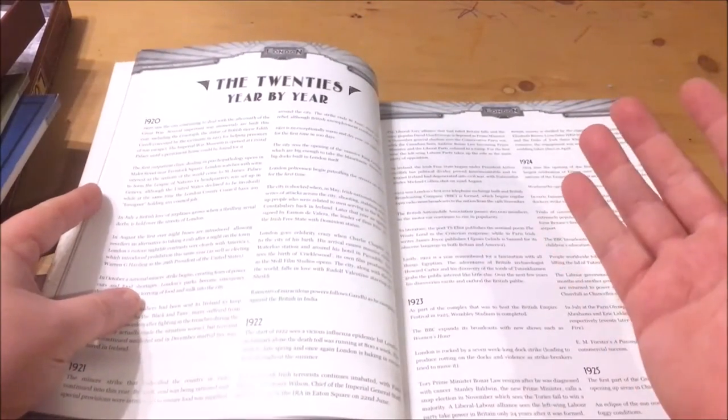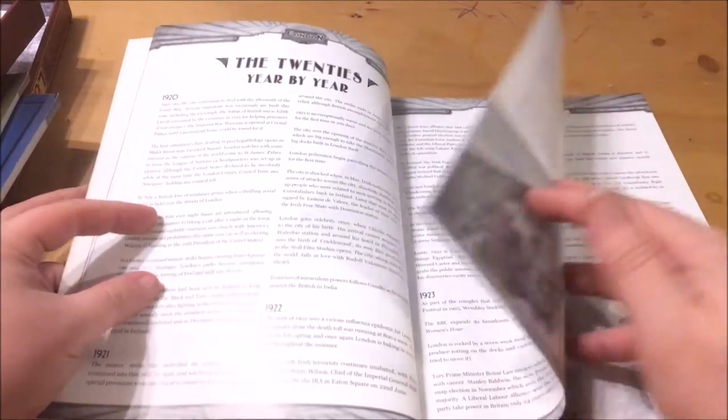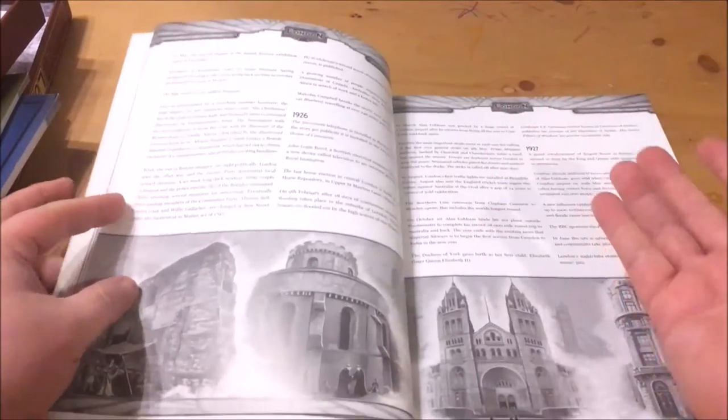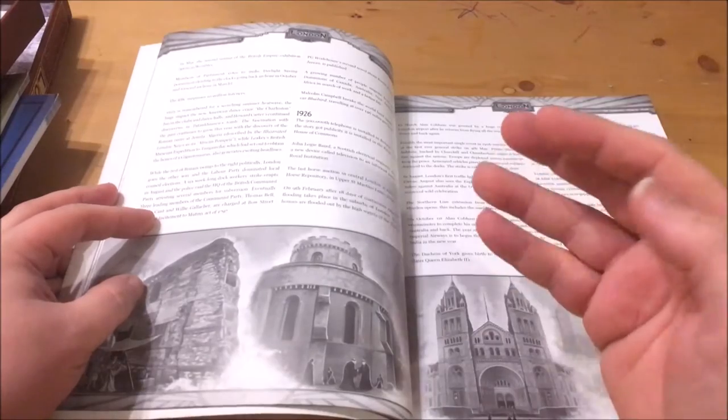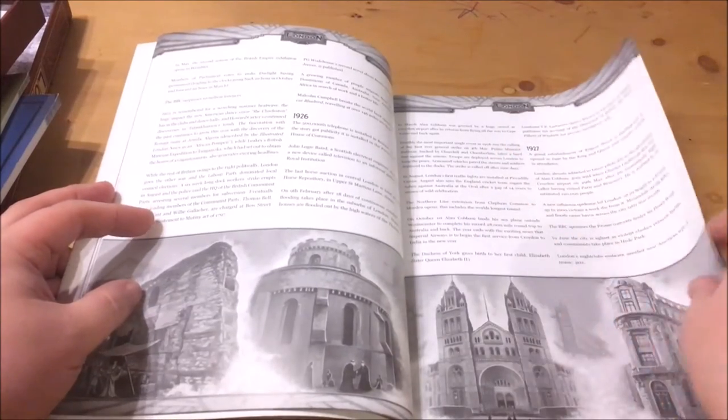Chapter 3 details 1920s year by year and features such highlights as the discovery of King Tutankhamun's tomb, the formation of the BBC and the birth of the current Queen, Queen Elizabeth II.